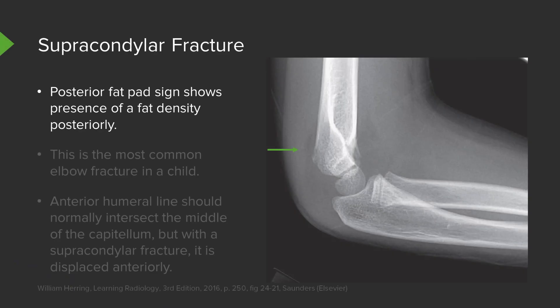Here we have a supracondylar fracture. In adults, a posterior fat pad sign — the presence of a fat pad posterior to the distal humerus — would suggest a radial head fracture, which is very commonly seen in adults. In kids, however, the most common elbow fracture is a supracondylar fracture. So when you see a fat density posteriorly, as indicated by this arrow, that would indicate a supracondylar fracture, which can otherwise be very difficult to see. This is the most common elbow fracture in a child.